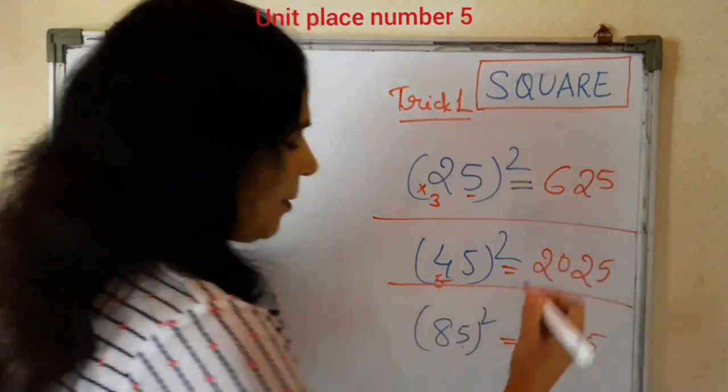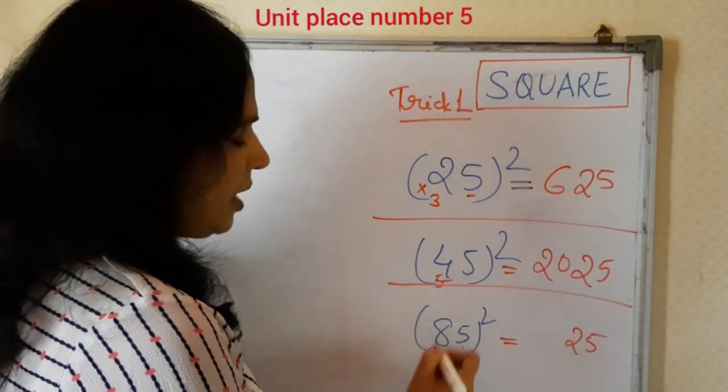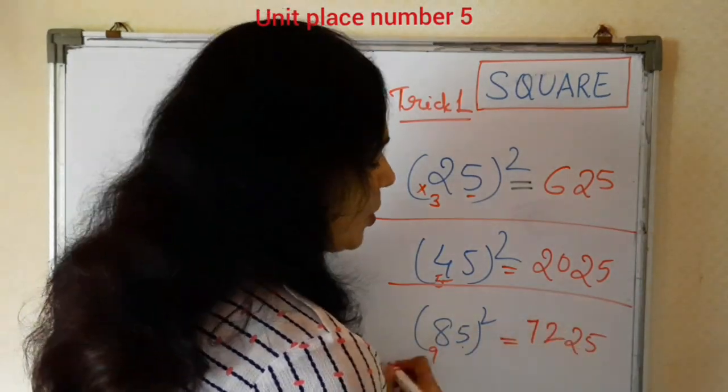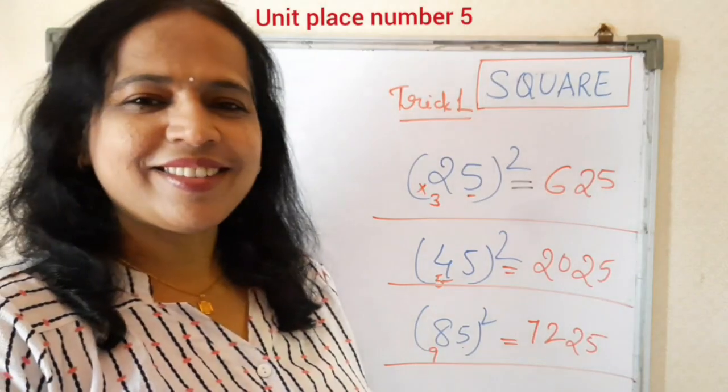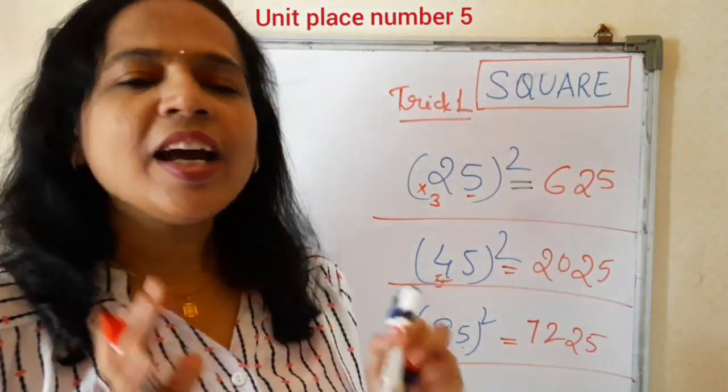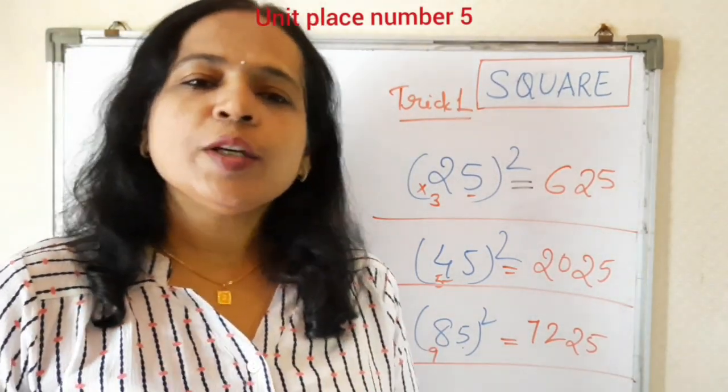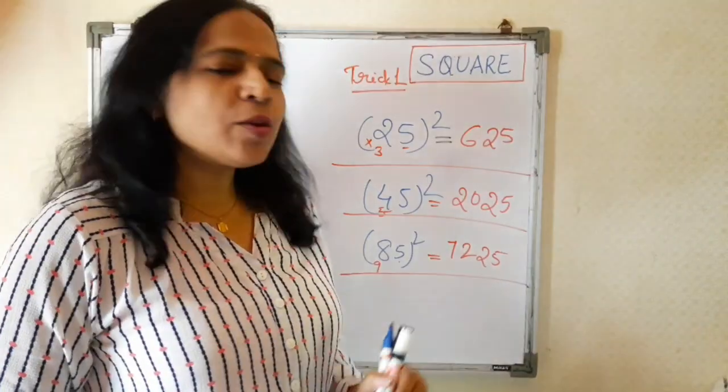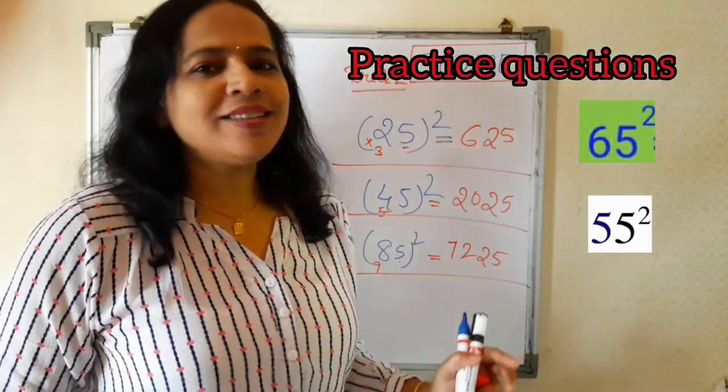5 square is 25. 8 next number is 9. Then 8 into 9 is 72. This is our square. So, you can take any numbers where the unit place is 5. You can use this trick. You can get the square within a second.